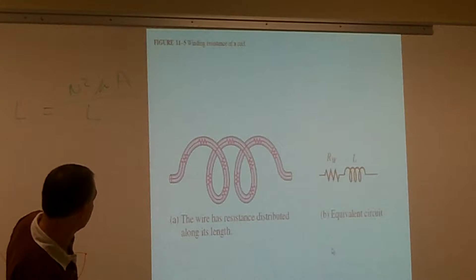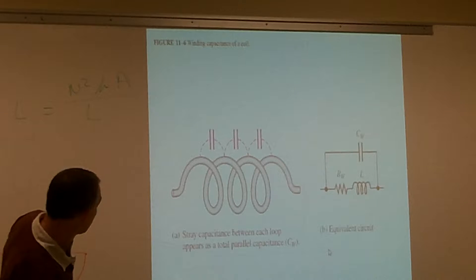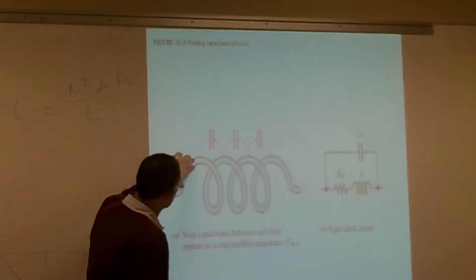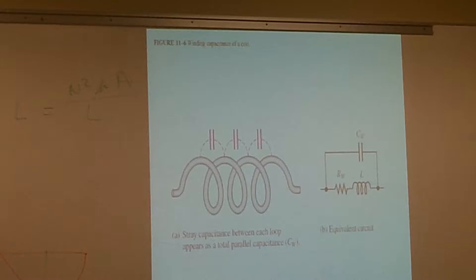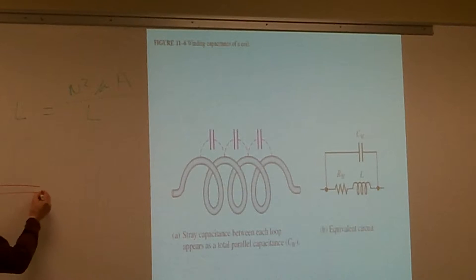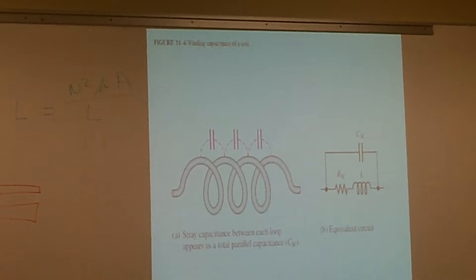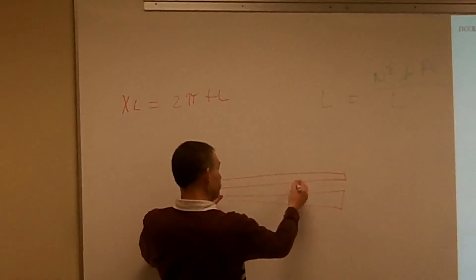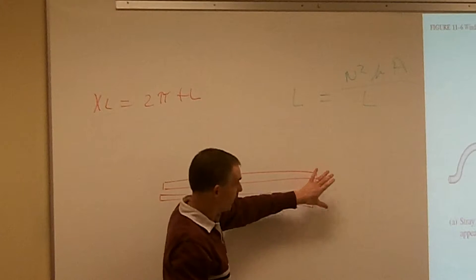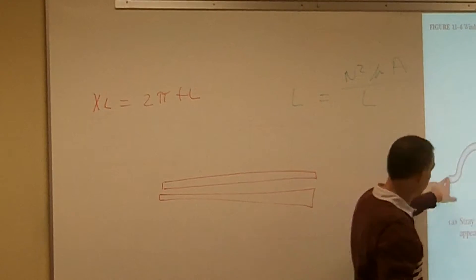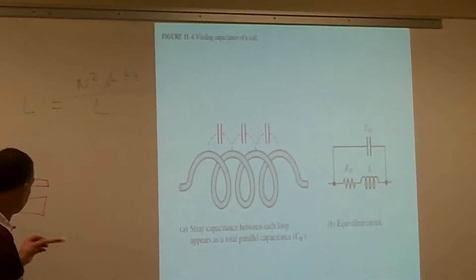The other thing - we kind of talked about this when measuring capacitors - is that we can have what we call stray capacitance. If we have two pieces of wire side by side, we've kind of formed ourselves a capacitance. We have this inductor inside there, then we have the insulation of our wire, then the air gap, then insulation and another conductor, and we've formed our capacitance in there. That's our stray capacitance.